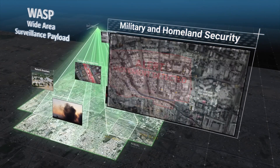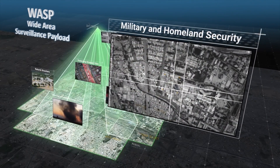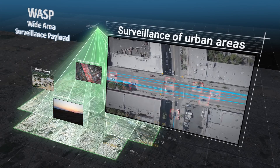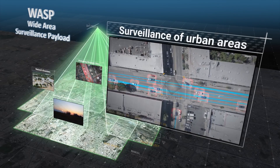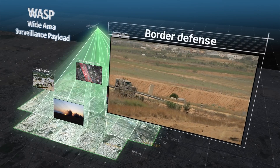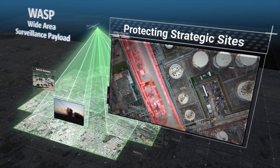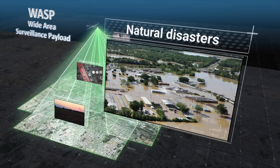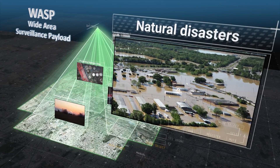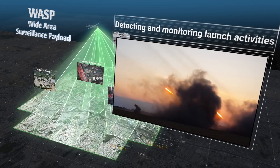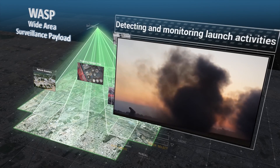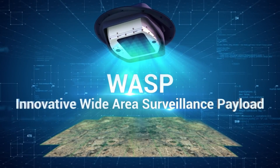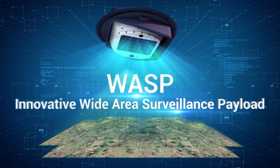The WASP system has many uses for both military and homeland security: surveillance of urban areas for police or military usage, border defense, protection of strategic sites, securing large events, control and coverage of natural disasters, and detecting and monitoring launch activities before and after the launch. WASP — innovative wide-area surveillance payload for full situational awareness.